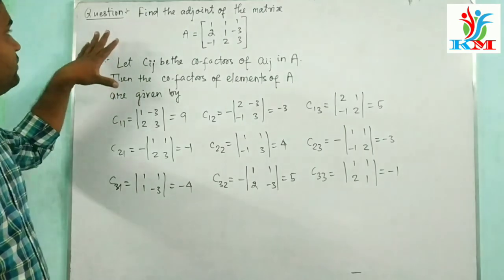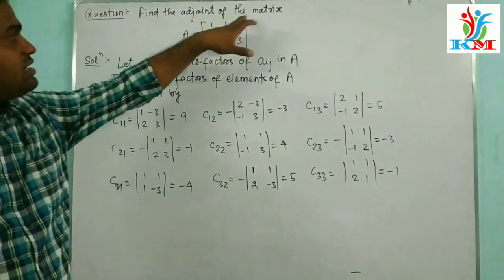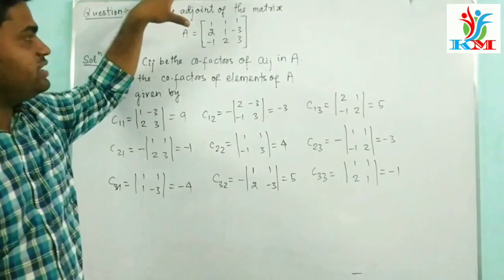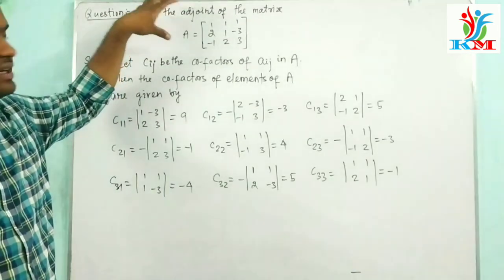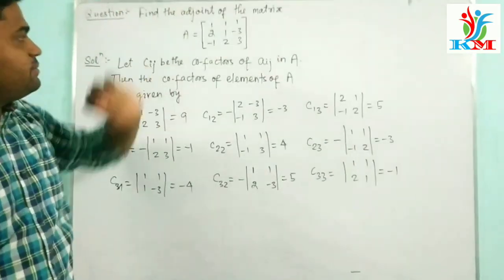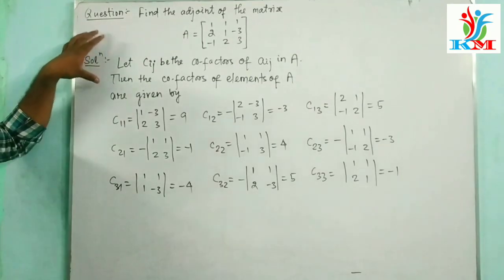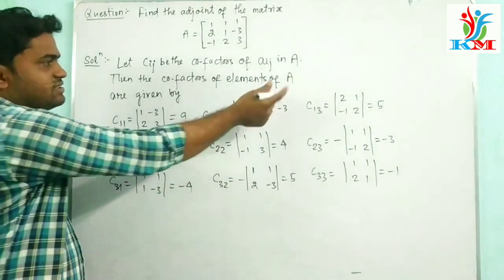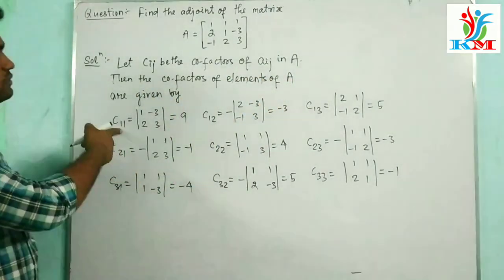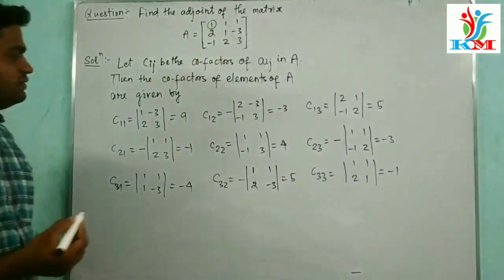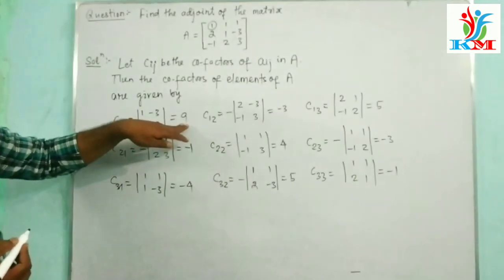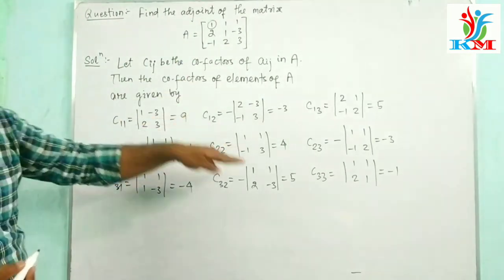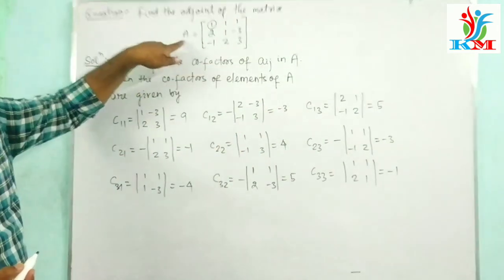Now let's see a question. The question is: find the adjoint of the matrix A. For finding the adjoint, we have to first find the co-factors of the elements of this matrix. Let Cij be the co-factor of Aij in A. Then the co-factors of the elements are given as follows — C11, the co-factor of element 1, is equal to 9. These are the co-factors of the elements of matrix A.